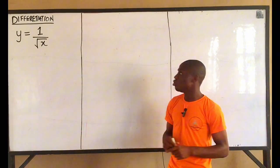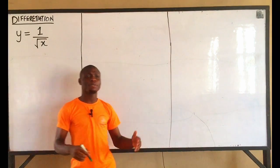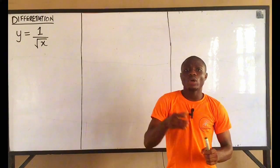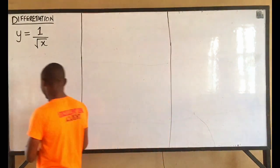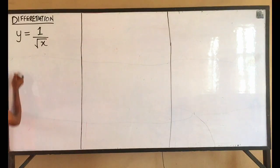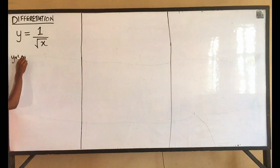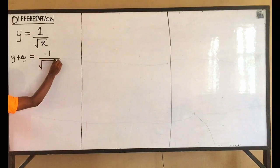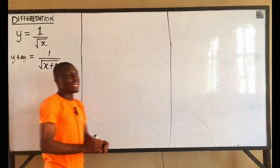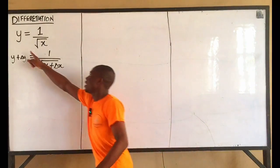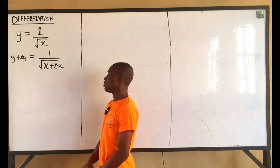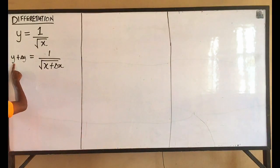From the idea of first principles, we know that y plus change in y equals the function evaluated at x plus change in x. So my first step using first principles: y plus change in y equals 1 over root of (x plus change in x). The idea is that wherever we have x, we add change in x.